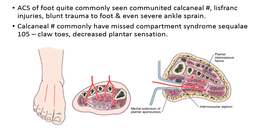To decompress the foot, two dorsal incisions are used — one over the second metatarsal shaft and one along the fourth metatarsal shaft — to decompress the superficial and deep compartments, the interossei, and the lateral compartment. For the medial compartment, a medial incision is used extending from the medial malleolus, similar to the incision used for calcaneus fracture fixation, extended further medially to decompress the medial compartment and adductor hallucis.